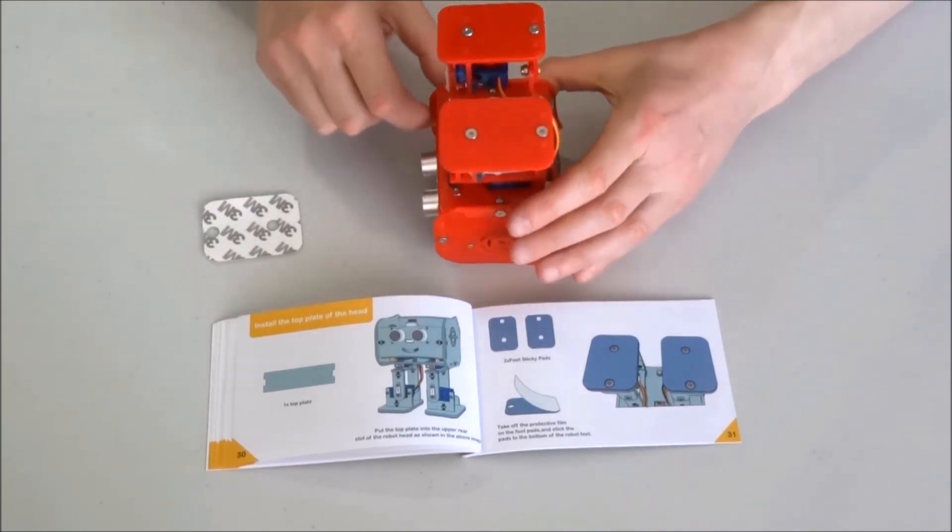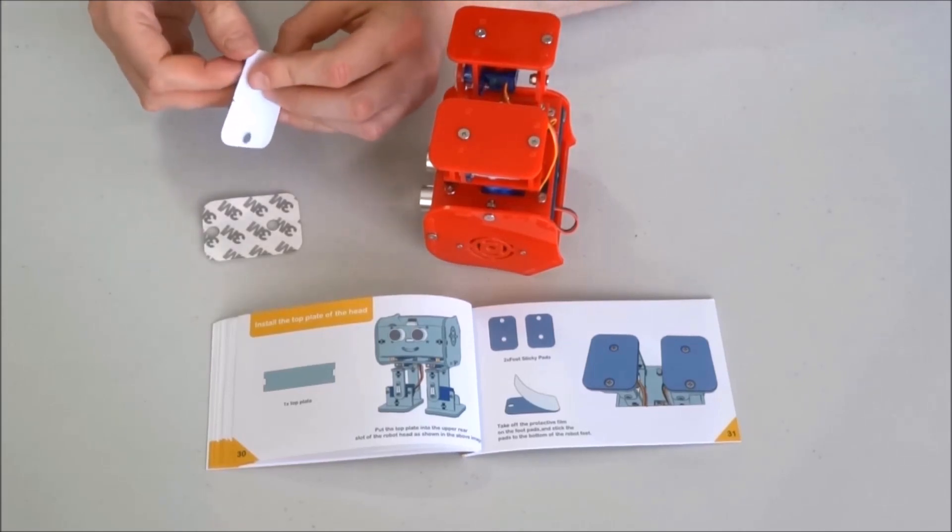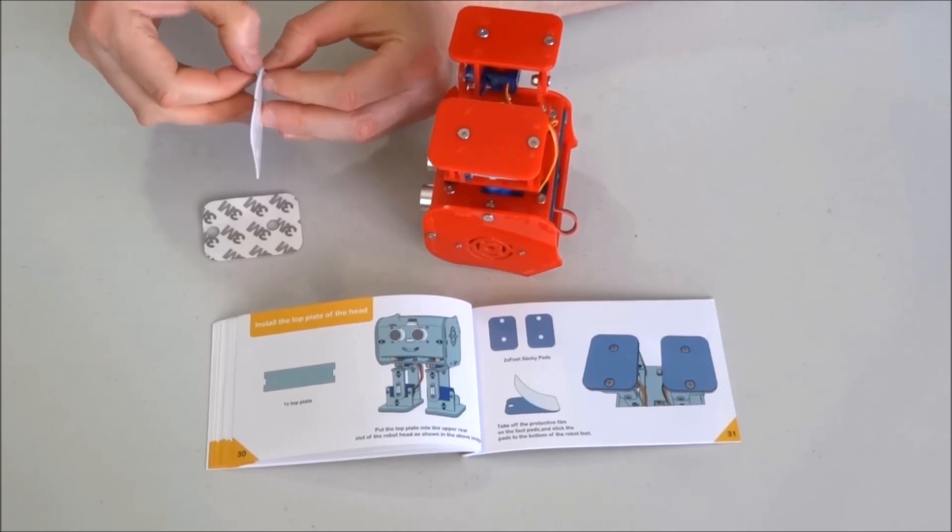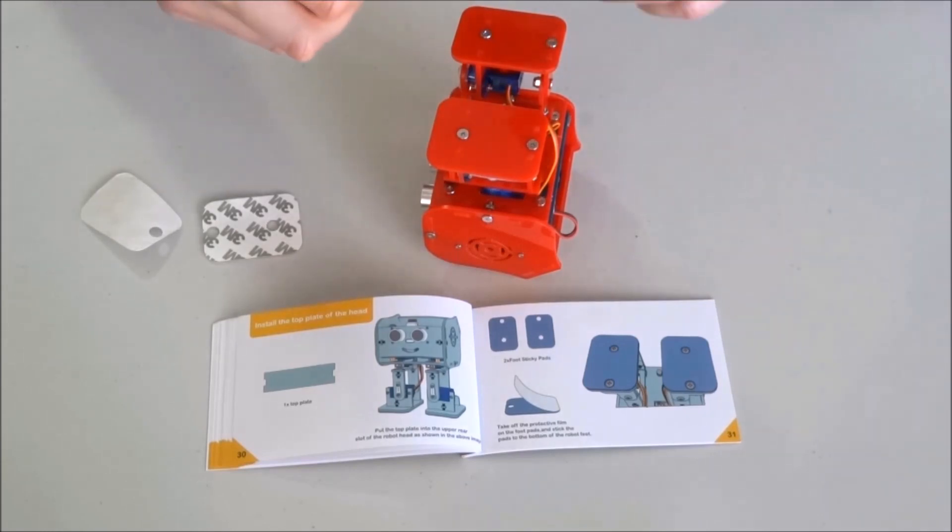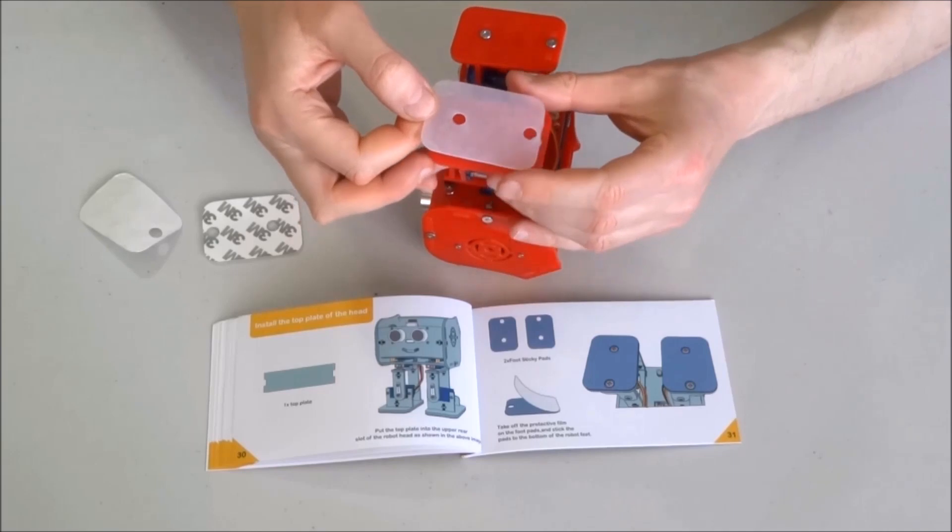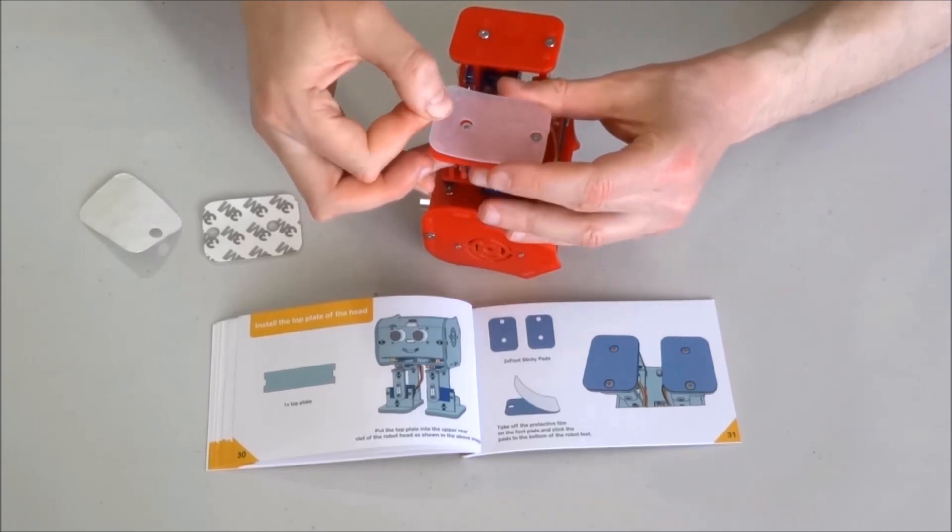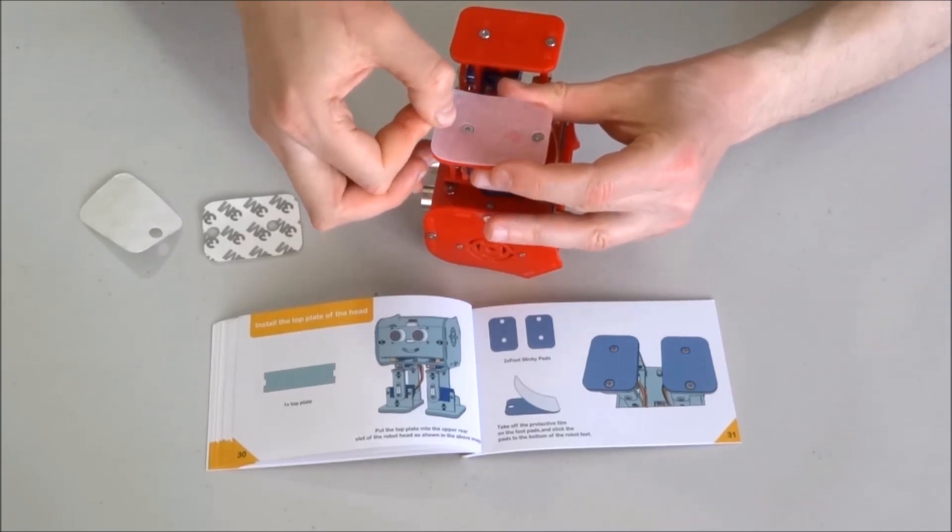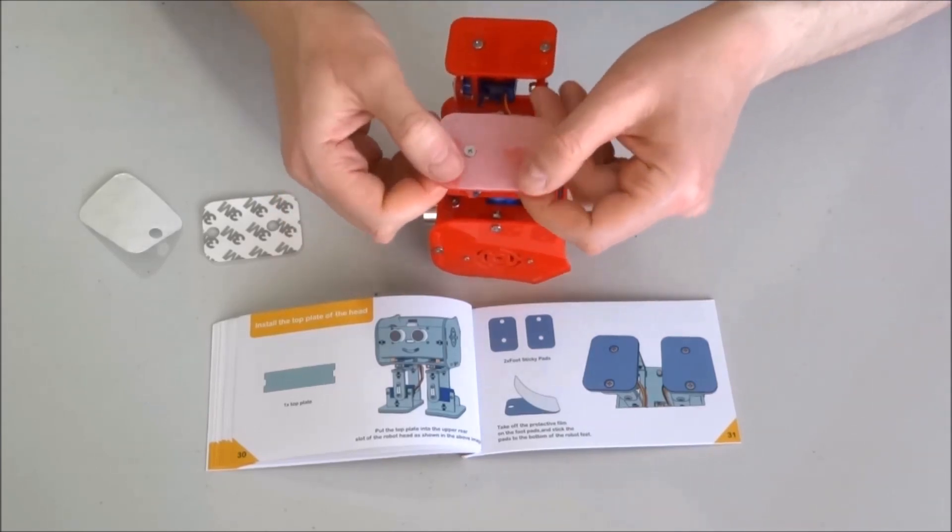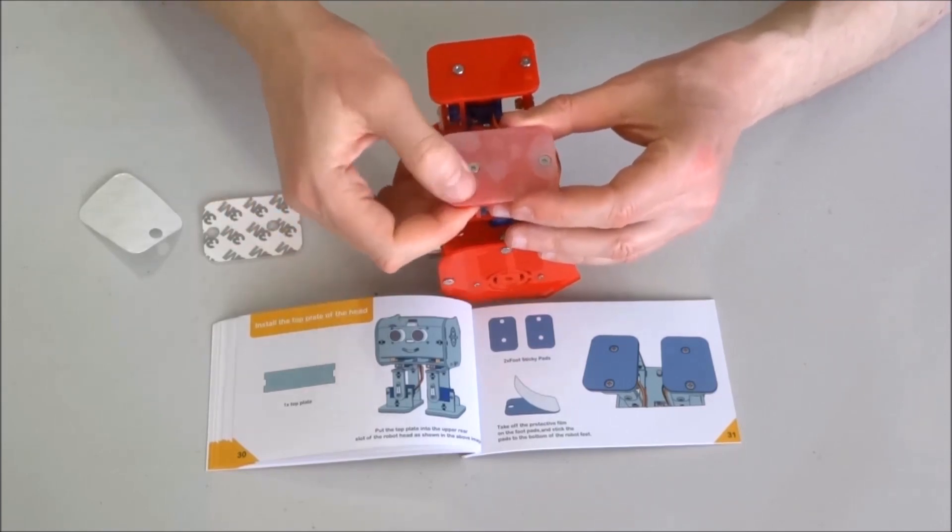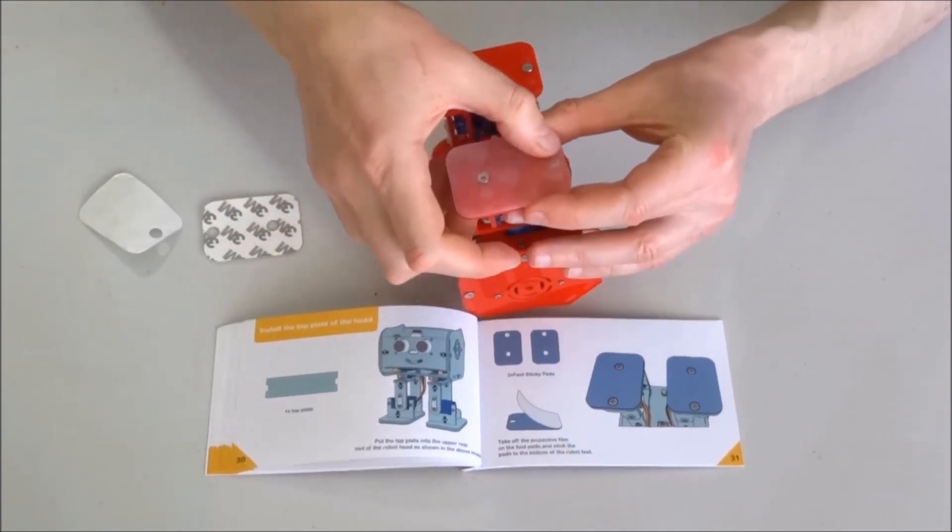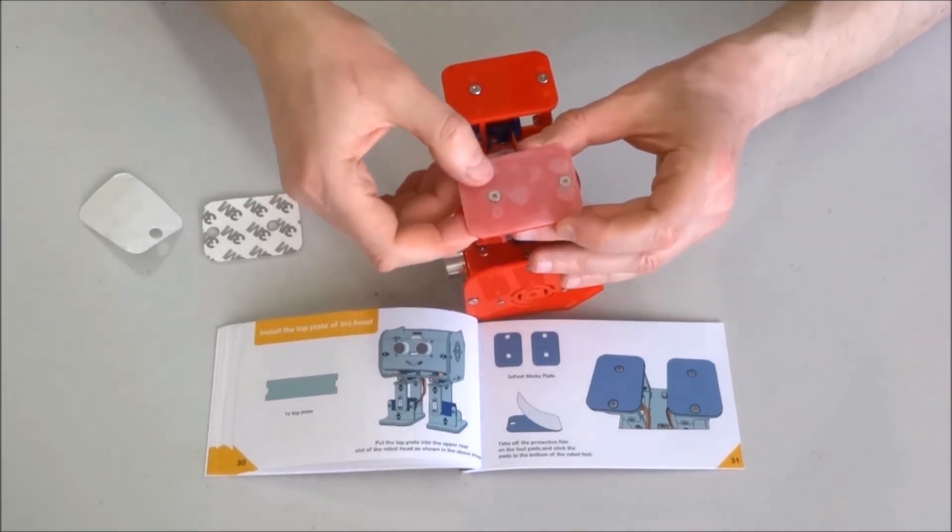Turn the robot over. Peel the protective layer for the glue. Very carefully place the sticky part over the foot. There are corresponding holes for the two bolts. Now I can press to have it glue in place.